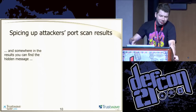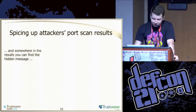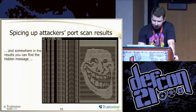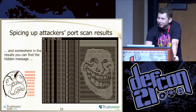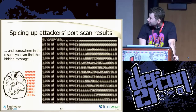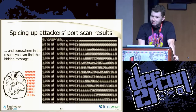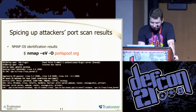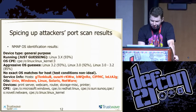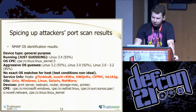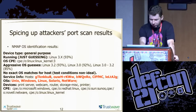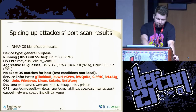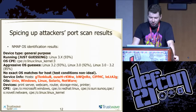Somewhere when attackers go through the service scan, you can find a hidden message. You can put any ASCII out there. Also, the OS detection results are a bit strange — for example, the real operating system was actually Linux 3.2, but here you have unsure results plus Unix, Windows, Linux, Solaris. You don't know what it is.